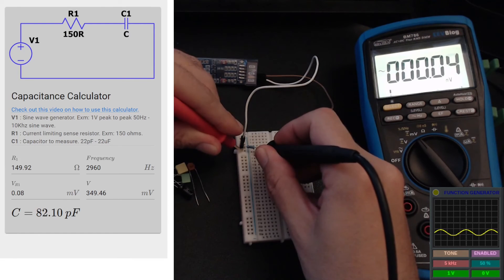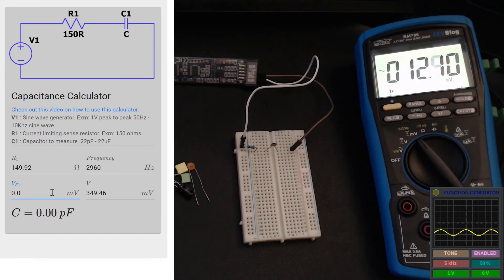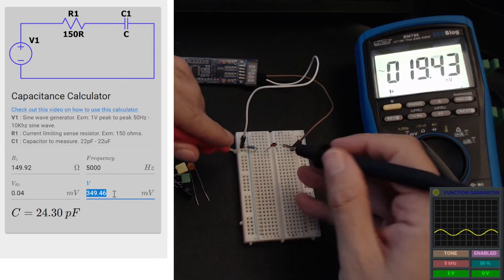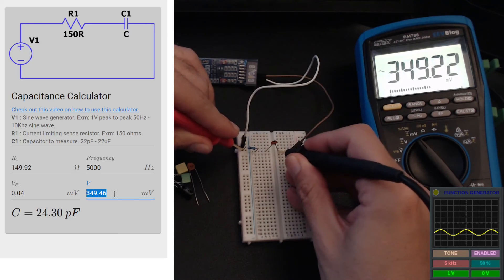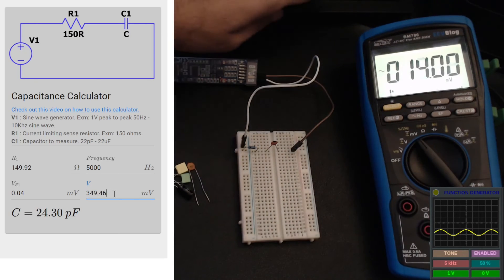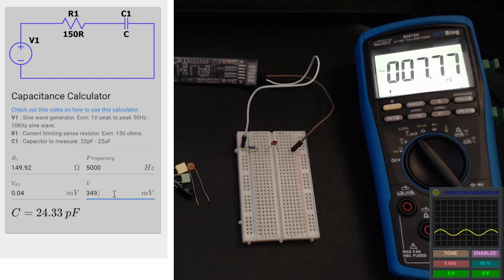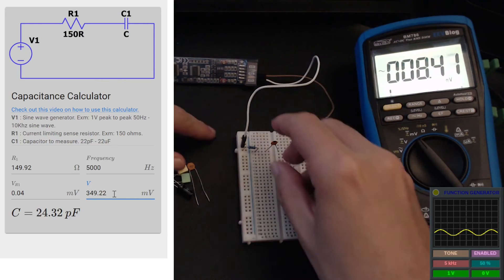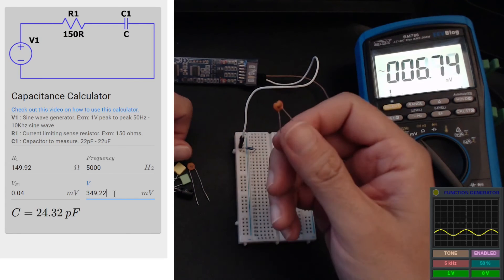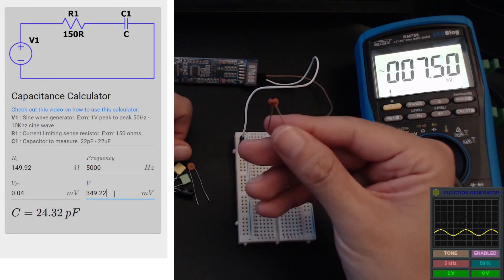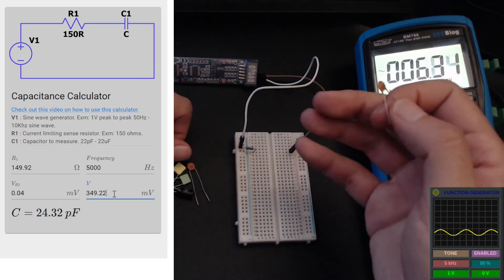Let's input our new values - 0.04, and our frequency is 5 kilohertz. And what is the voltage across the resistor and the cap? Let's measure that - 349.22. And that's 24.32 picofarads. This measurement is quite accurate and it's within the tolerances of the component and also the multimeter - it's not like doing perfect millivolt measurements anyways, it will always be a little bit higher.